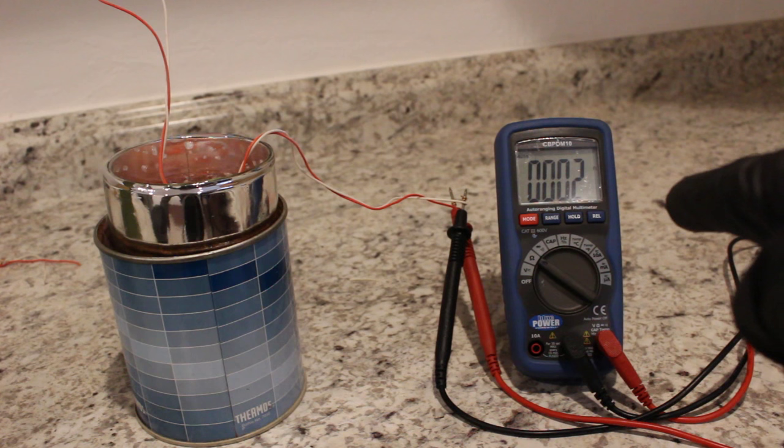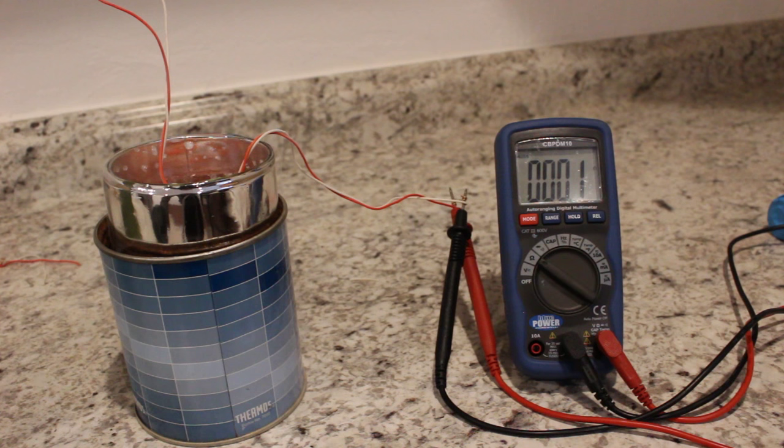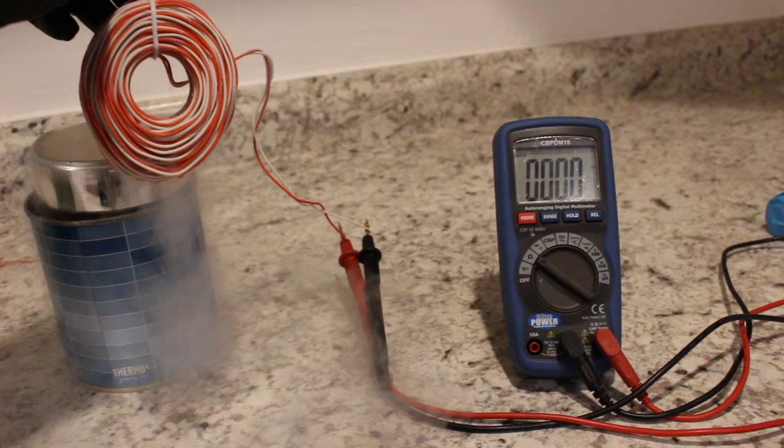So it's within the detection limits of this multimeter here. So that is a significant drop in resistance in that wire. No wonder the light bulb got so bright.